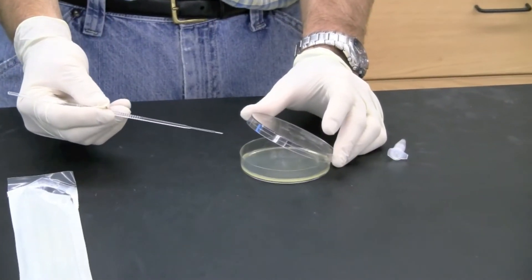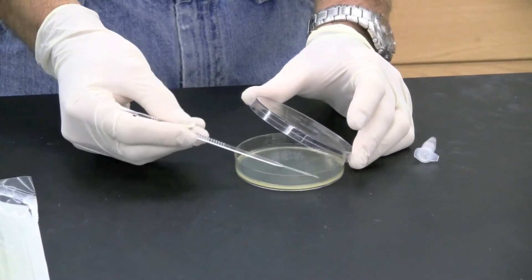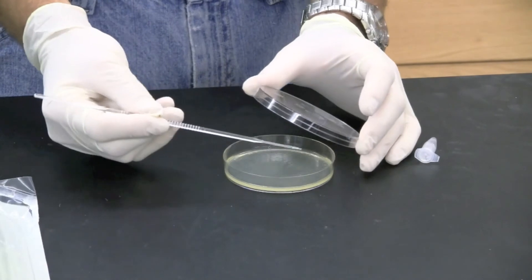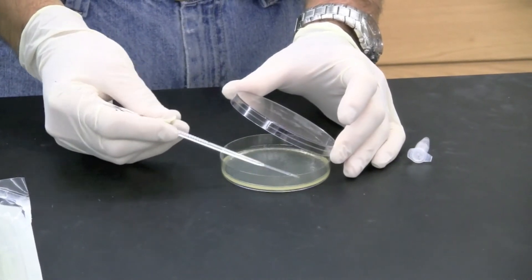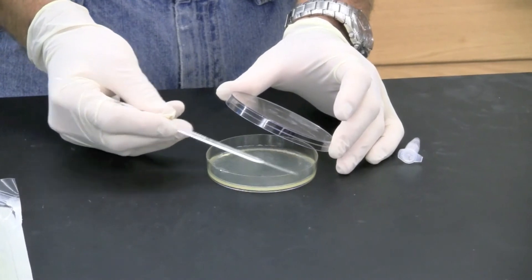Carefully open up the petri dish and begin to streak the plate. Be sure to leave the cover as closed as possible to avoid contamination. Do not touch the tip on anything.